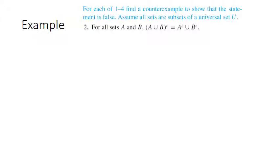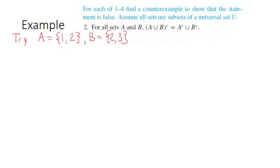Let's look at this example where we're supposed to find a counterexample to show that a statement is false, assuming all sets are subsets of a universal set U. We're looking for sets A and B that make this equation false. This should be false because it's a misapplication of De Morgan's laws — in De Morgan's laws it's the complement of the intersection of A and B that equals the union of their complements. Let's try the first possible counterexample with a partial overlap: A = {1,2} and B = {2,3}.